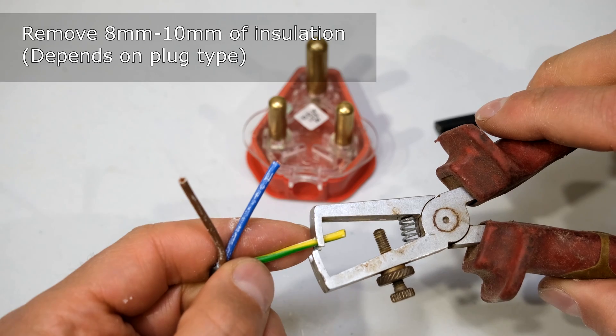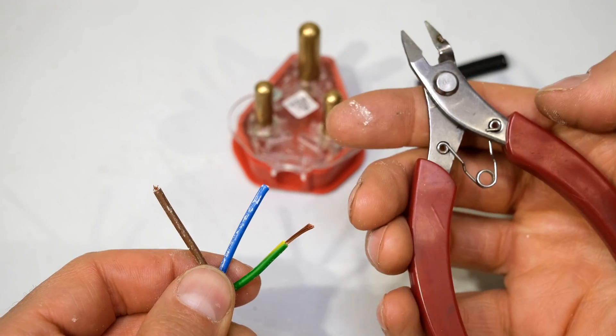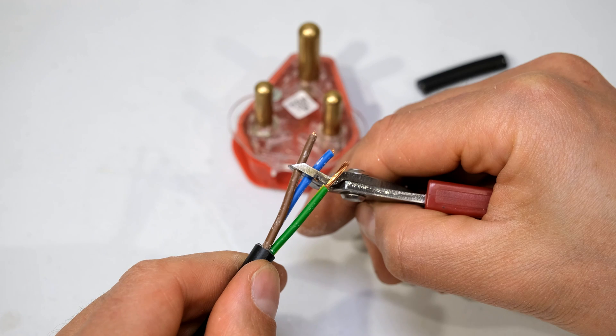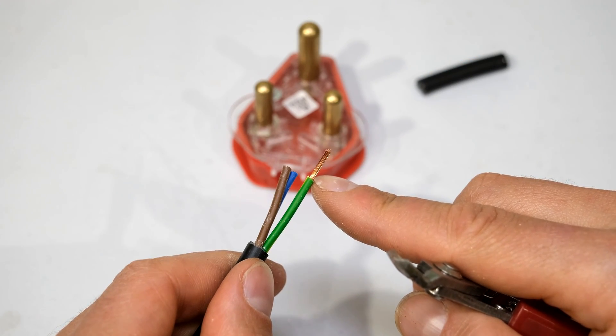Right, now you take wire strippers and you remove about 10 millimeters of the insulation. If you don't have wire strippers, you can use side cutters. So what I do is I cut the blue and the brown wire at the level of where I removed the insulation of the earth wire.